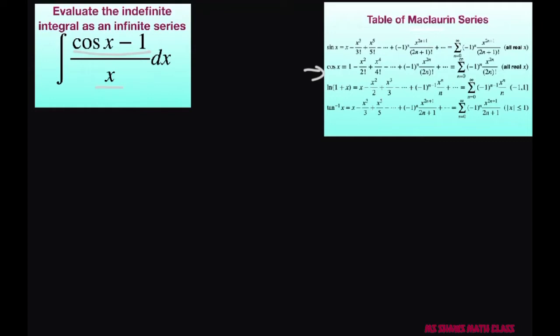So before we get started let's note that cosine of x equals the sum n equals zero to infinity of negative 1 to the nth power times x to the power of 2n divided by 2n factorial.